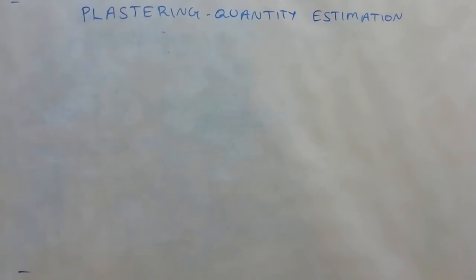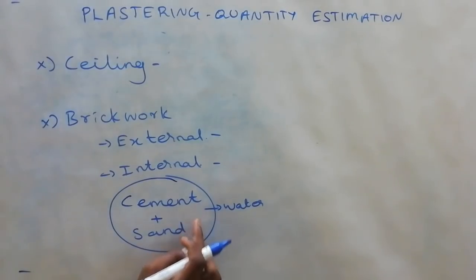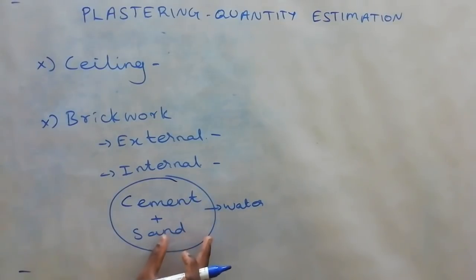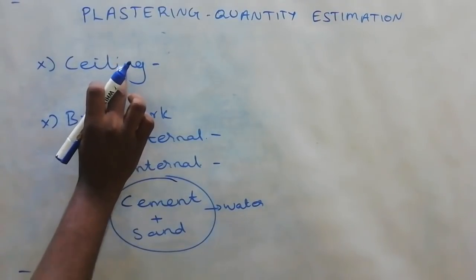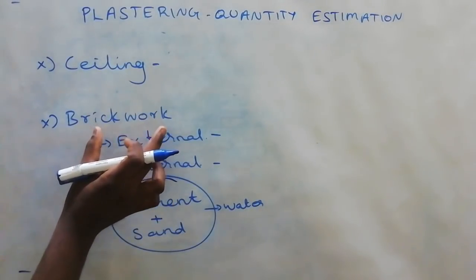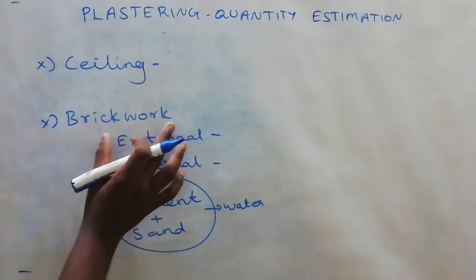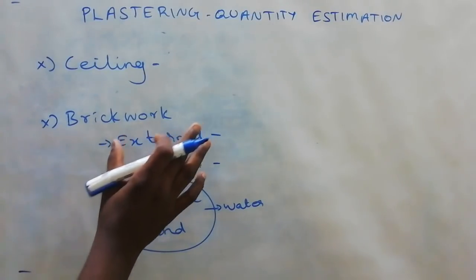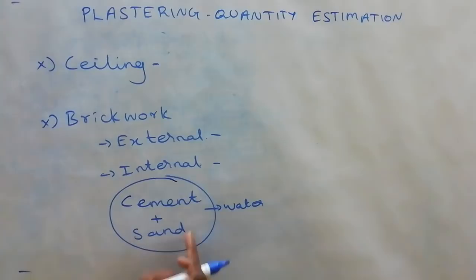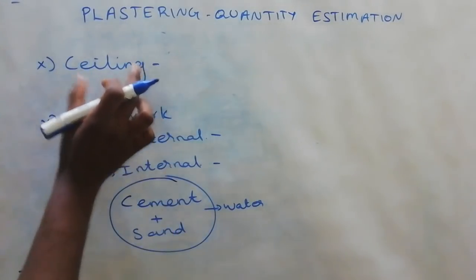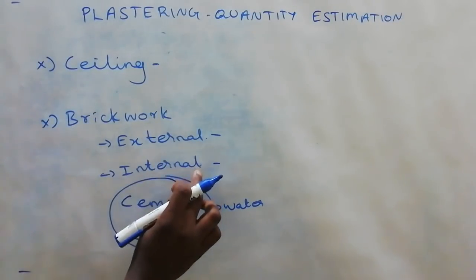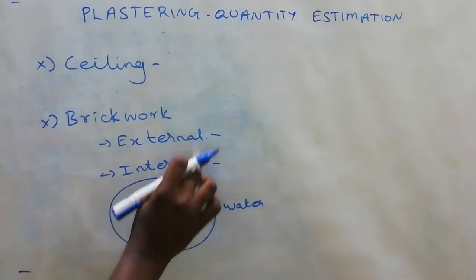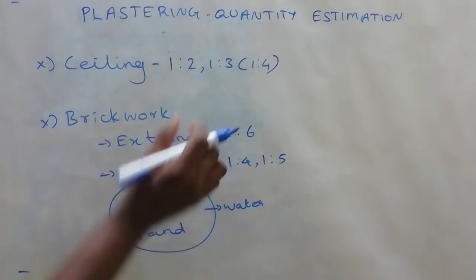In this video, it will be easy to understand how to use cement and sand for plastering. We will look at the ratio of the ceiling or wall. This makes a huge difference — now looking at the brick ratio.